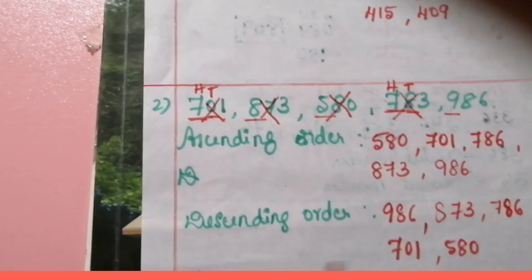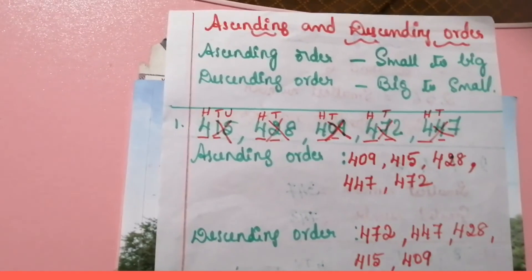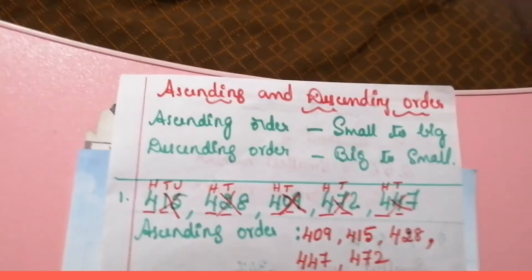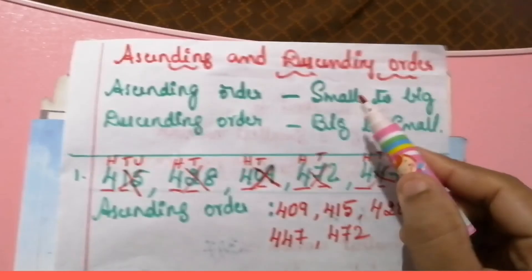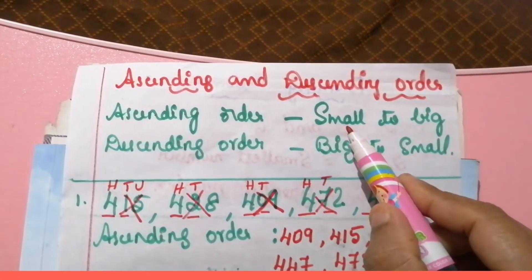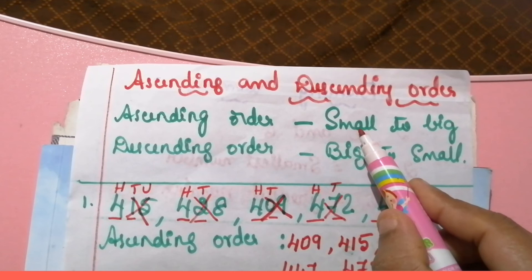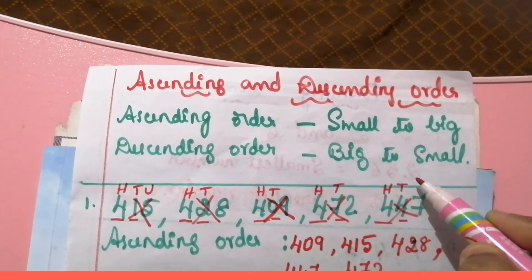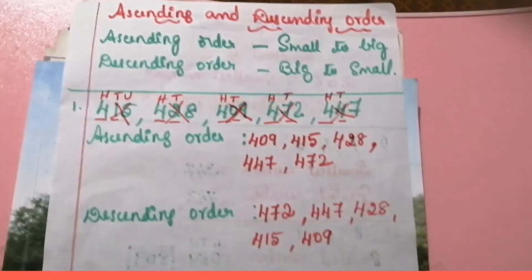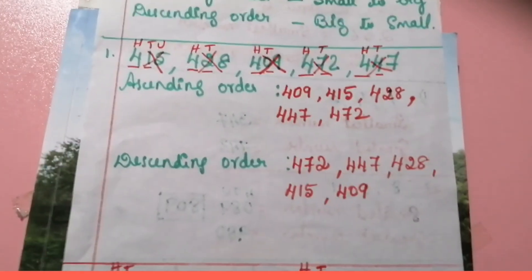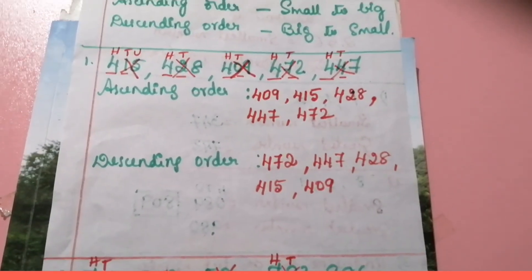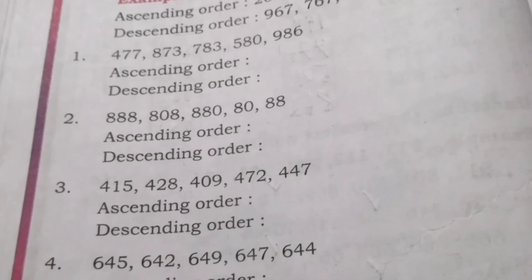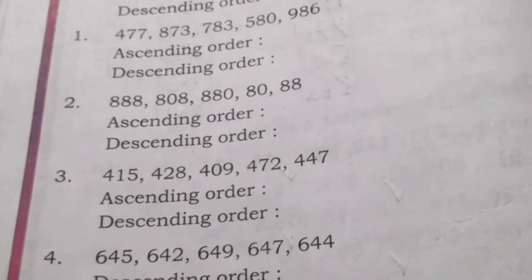So this is in descending order. We have to remember the key points while arranging numbers in ascending and descending order. Ascending order: small number to the biggest number. Descending order: big number to the smallest number. Do this exercise in the reader, page number 60 — write in ascending and descending order.